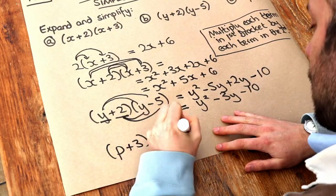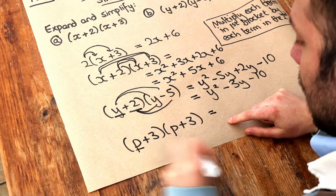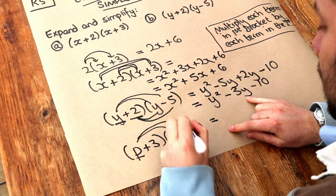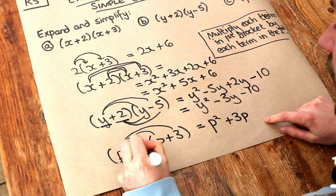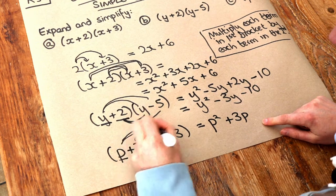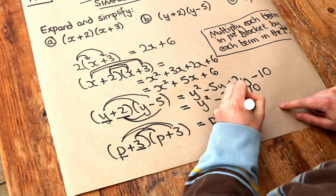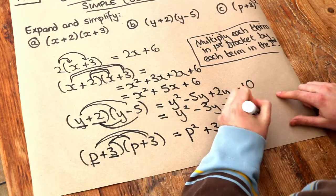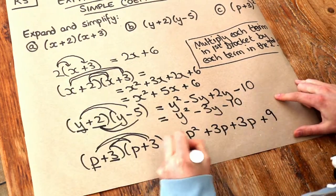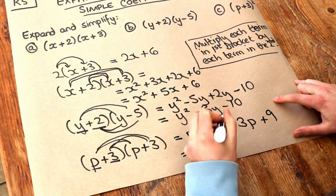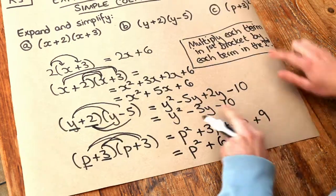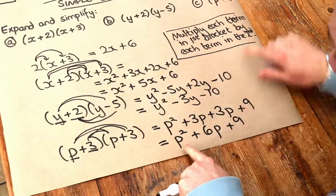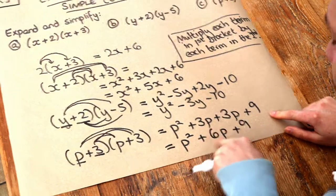So we have p plus 3 multiplied by itself. We do the first thing in the first bracket multiplied by each of the things in the second: p times p is p squared, and p times 3 is 3p. Then we do the second thing in the first bracket multiplied by each thing in the second: 3 times p is 3p, and 3 times 3 is 9. That gives us p squared plus, well, 3 lots of p plus 3 lots of p is 6p, plus 9. It's that 6p term that students tend to forget if they just do p squared plus 3 squared — they get p squared plus 9 but forget the extra term in the middle.